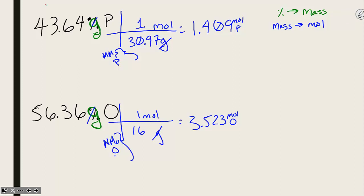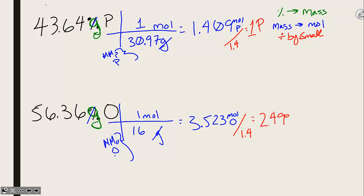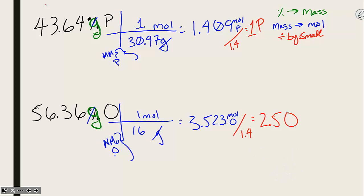Step 3 — divide by small: since formulas are a ratio of one element to another, divide both mole values by the smallest number (1.4). Anything divided by itself is 1, so we get a ratio of 1 phosphorus for every 2.5 oxygens. But you cannot have half an oxygen, so the poem has one final step.